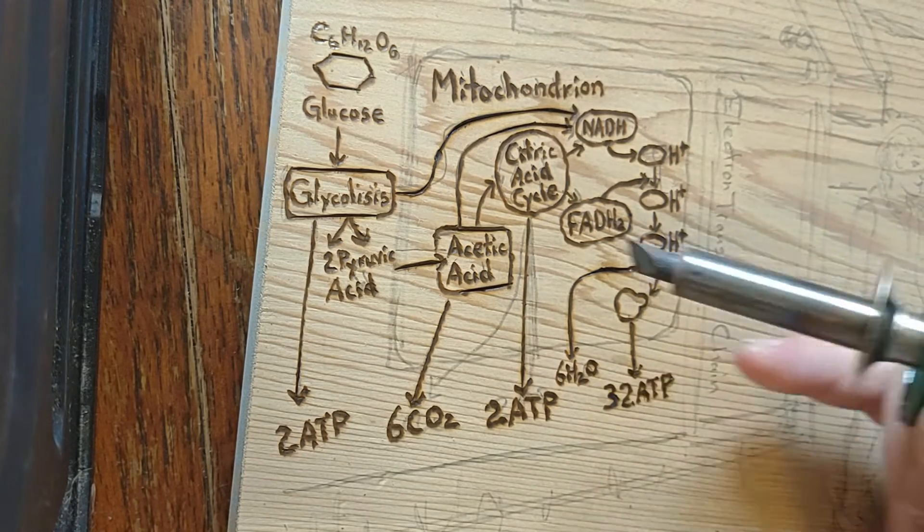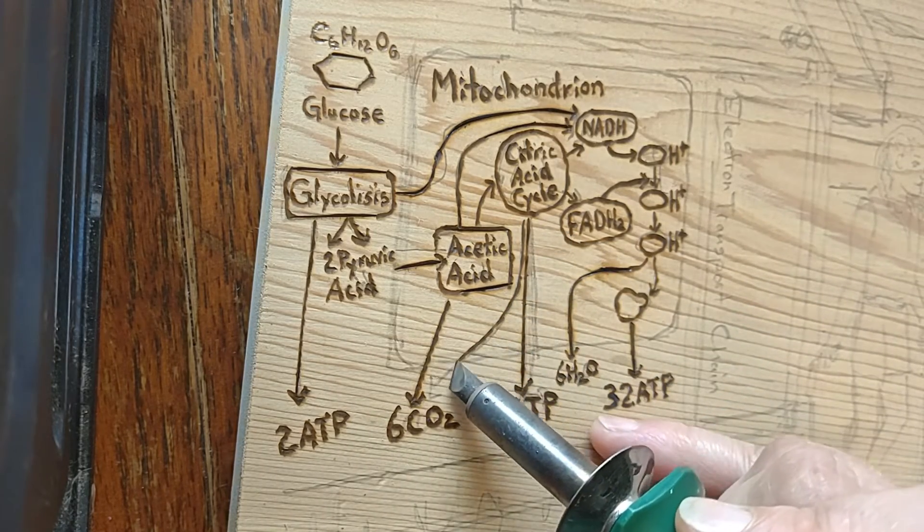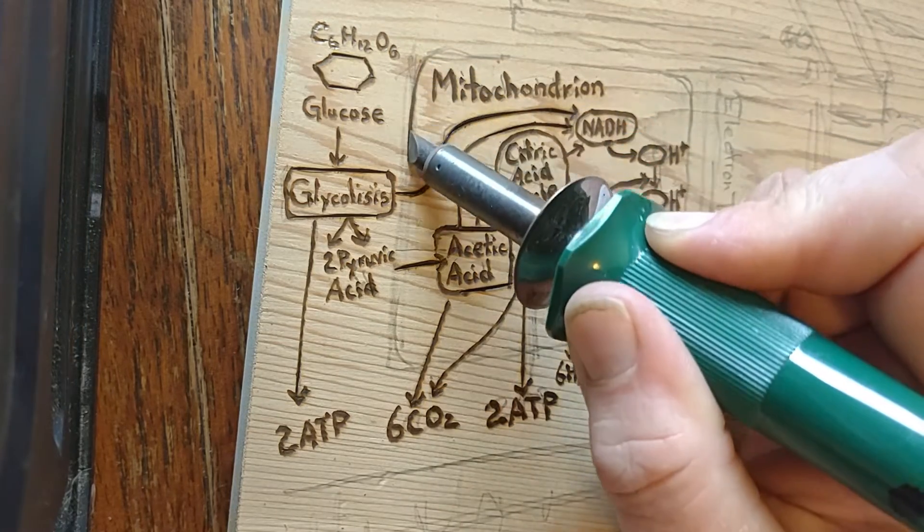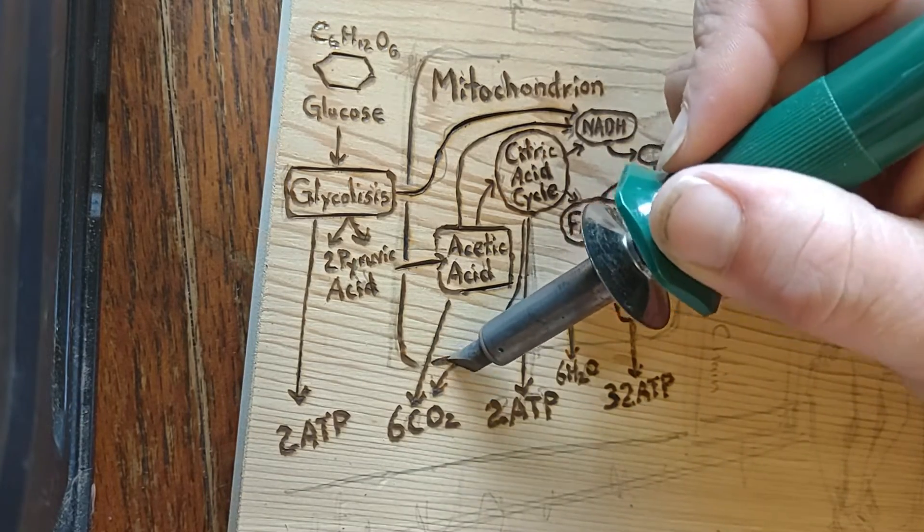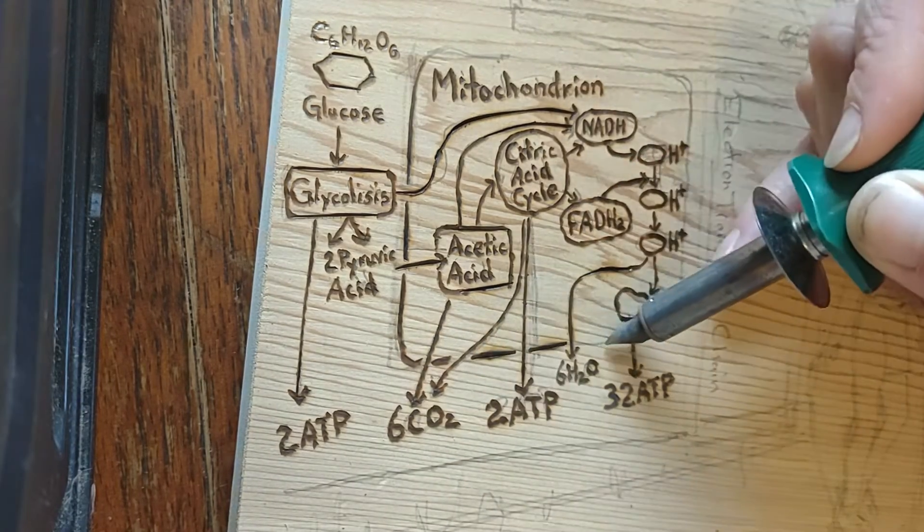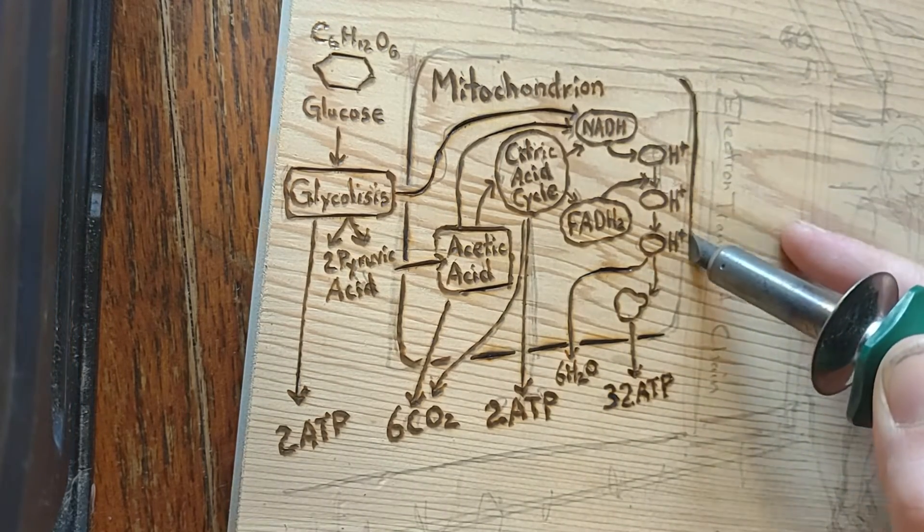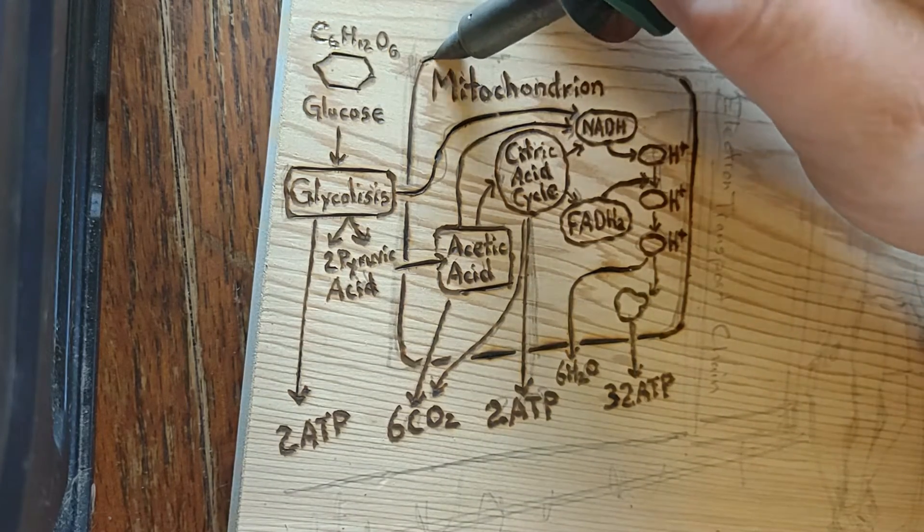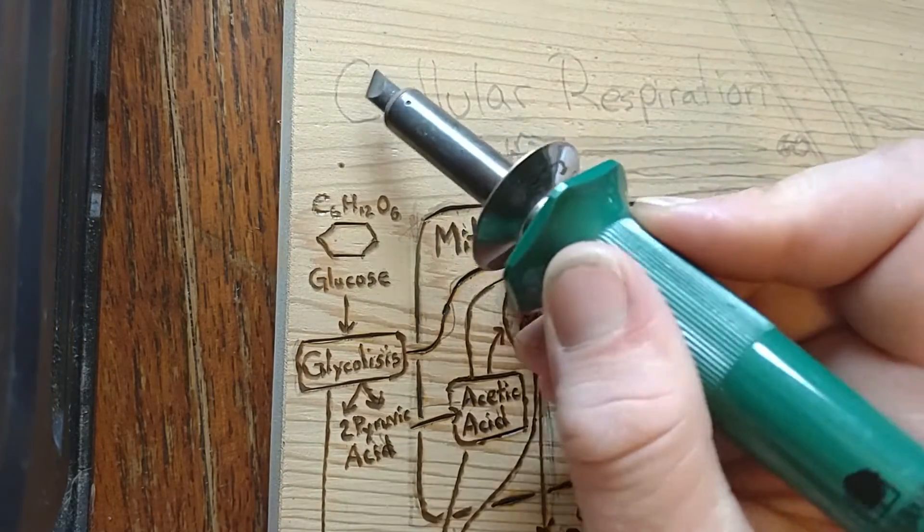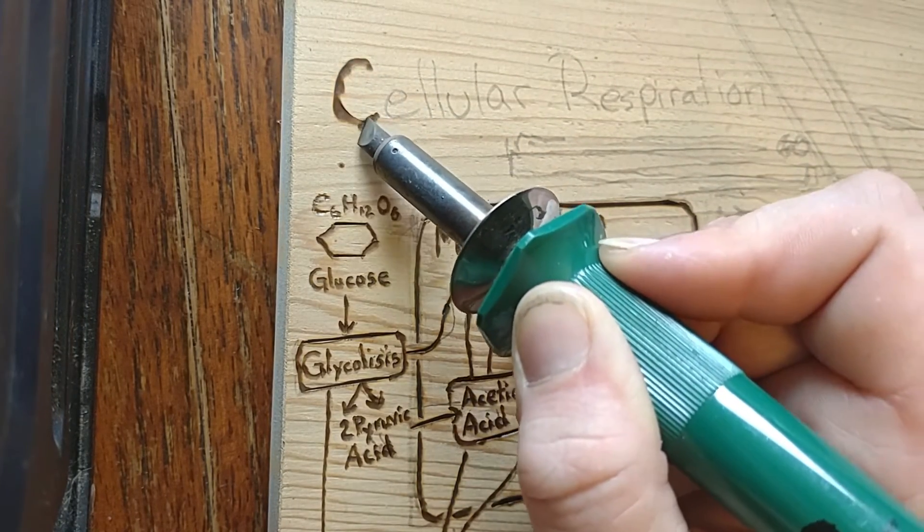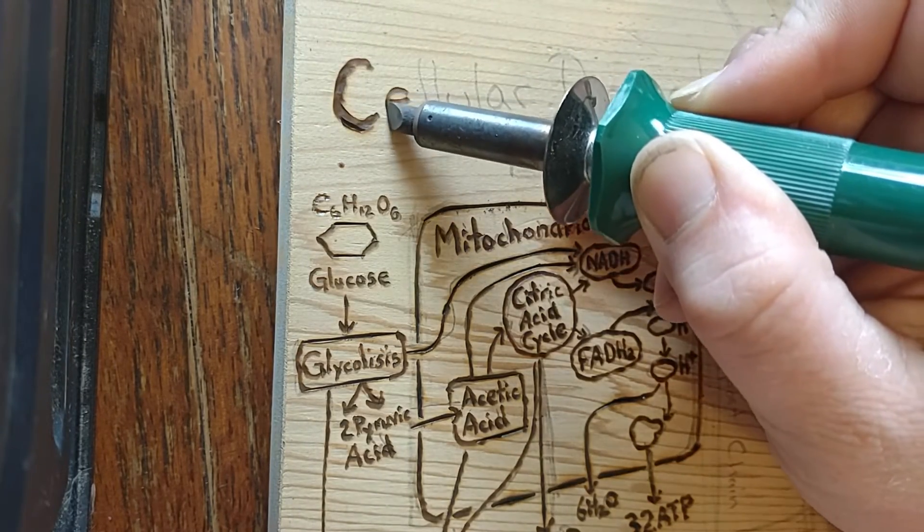The net gain from one cycle is three NADH and one FADH2 as hydrogen, protons plus electrons, carrying compounds, and one high-energy GTP, which may subsequently be used to produce ATP. Thus, the total yield from one glucose molecule is six NADH, two FADH2, and two ATP.